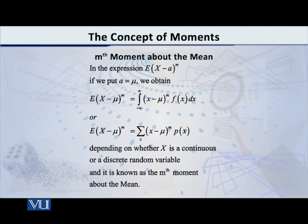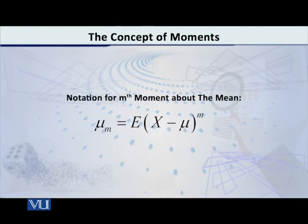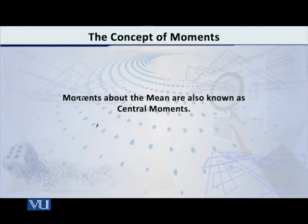The notation for the moment about the mean — as mentioned earlier — does not have a dash attached. So for m equal to 1, 2, 3, 4, we will have mu-1, mu-2, mu-3, mu-4, and so on. These moments about the mean are also called central moments.